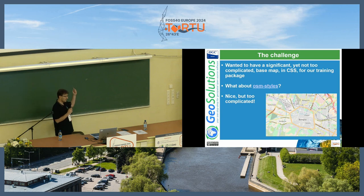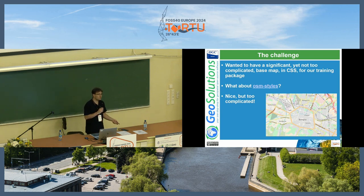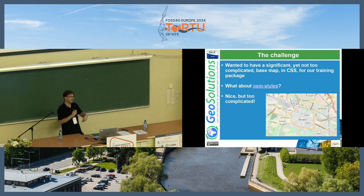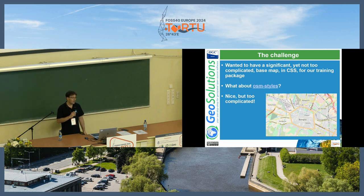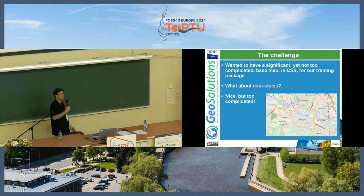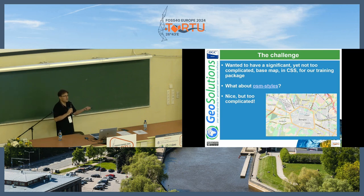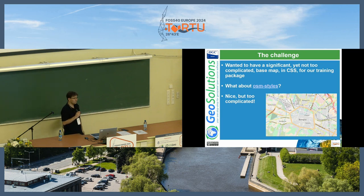We already have OSM Styles, which is a reproduction of OpenStreetMap with GeoServer that you can use to generate OpenStreetMap in your local projection, with your local restrictions — maybe to run a local GeoServer in a sealed environment that doesn't access the internet. It was great, but the problem is that it was way too complicated. Some of the styles in OSM Styles are 1,000 lines of CSS because OSM is that complicated, and it was not useful for teaching how to use CSS.